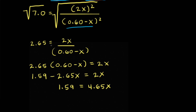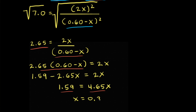Taking the square root of both sides gives us 2.65 equals 2x over (0.60 minus x). To solve for x, we multiply both sides by (0.60 minus x). After a little more algebra, we get 1.59 equals 4.65x, so x equals 1.59 divided by 4.65, which is equal to 0.34.